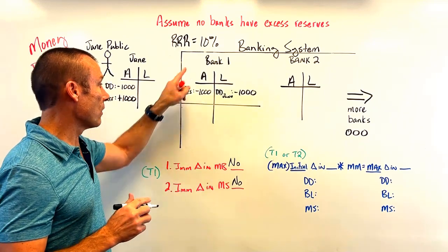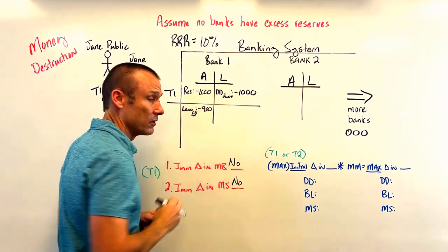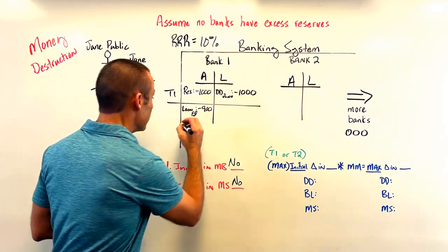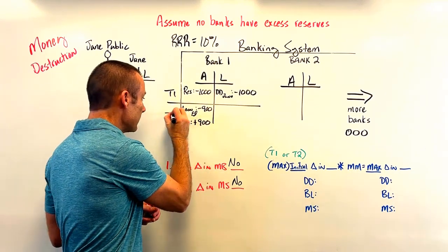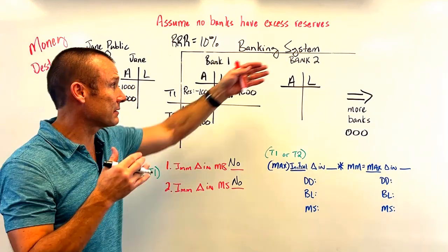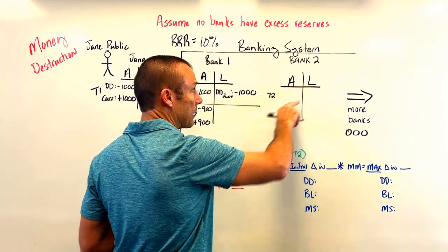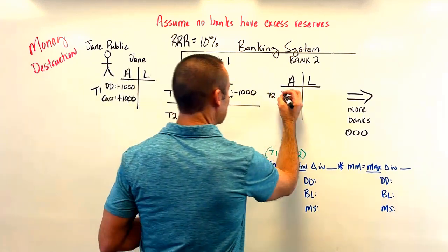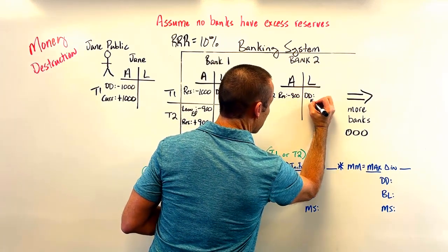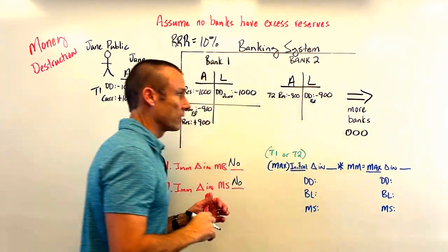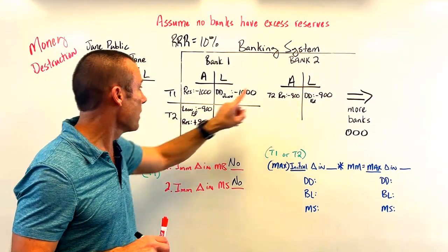Recording T2 on Bank 1: assets — loan (Ed's loan) minus $900; assets — reserves plus $900. Since Ed banks at Bank 2, the check gets cleared. Bank 2 T2: assets — reserves minus $900; liabilities — demand deposit (Ed) minus $900. When Bank 2 receives this check, they deduct Ed's checking account by $900 and lose reserves to Bank 1.